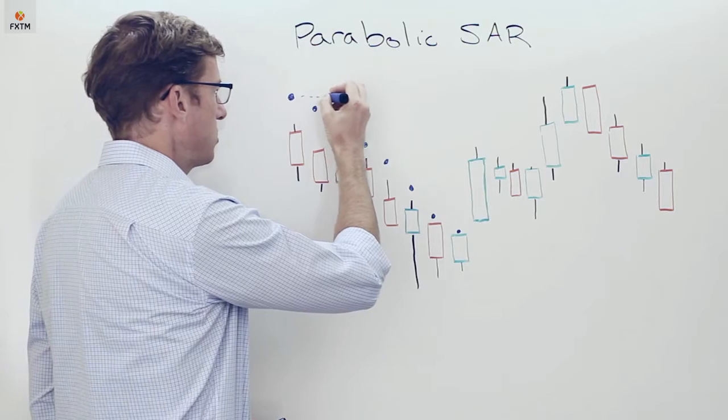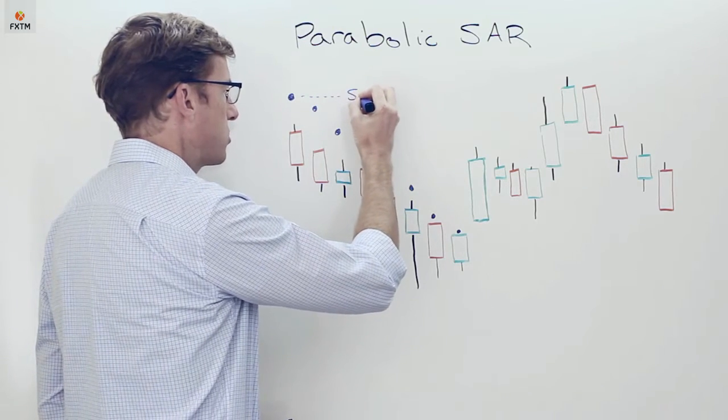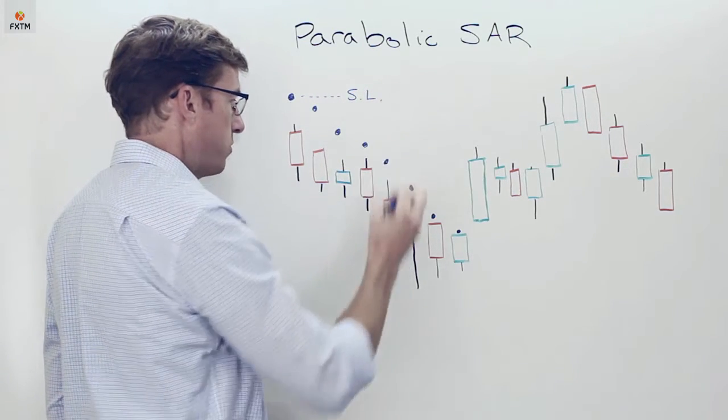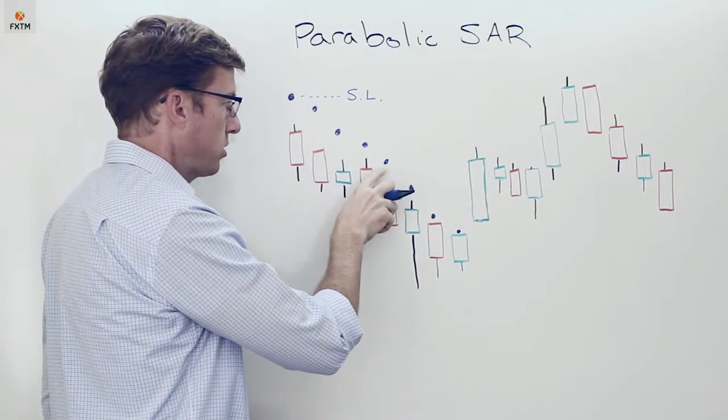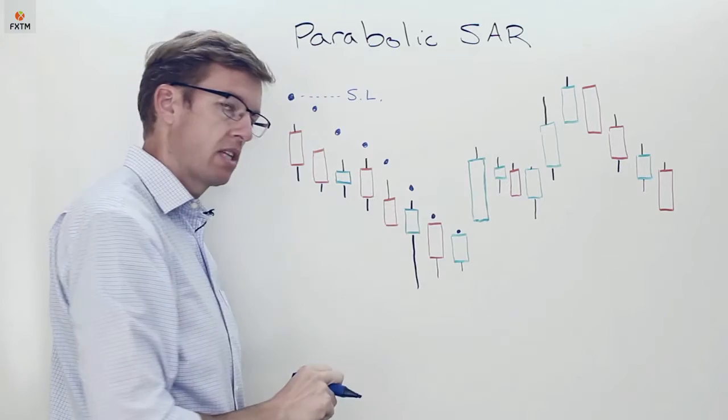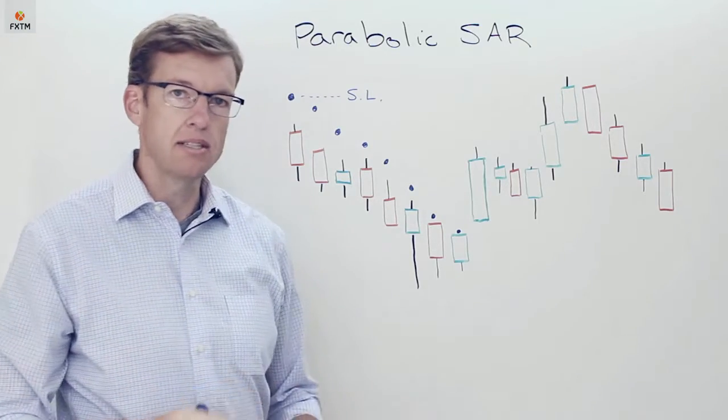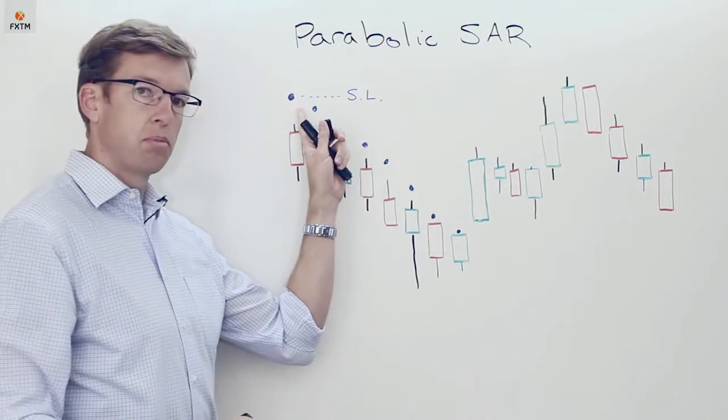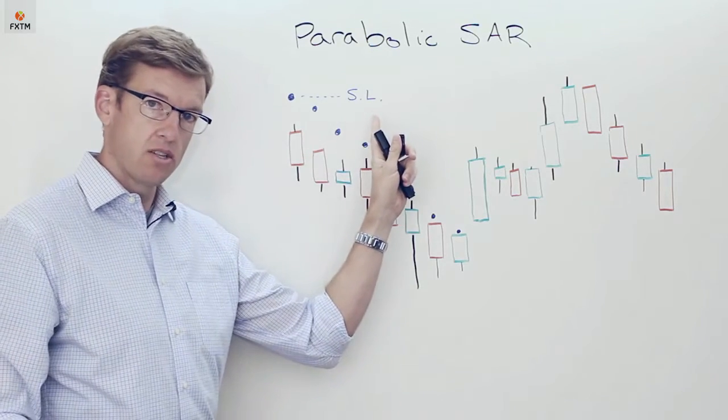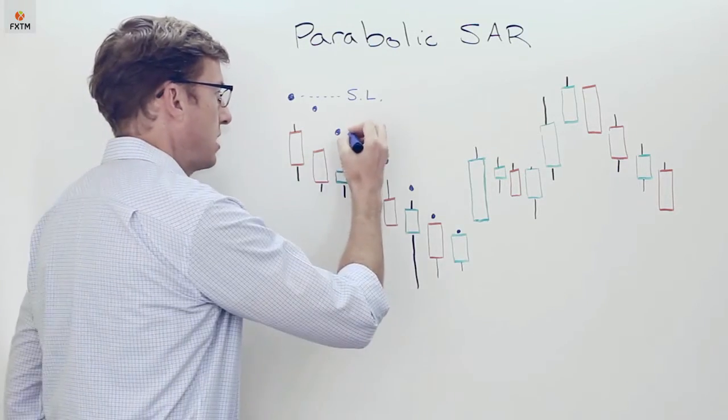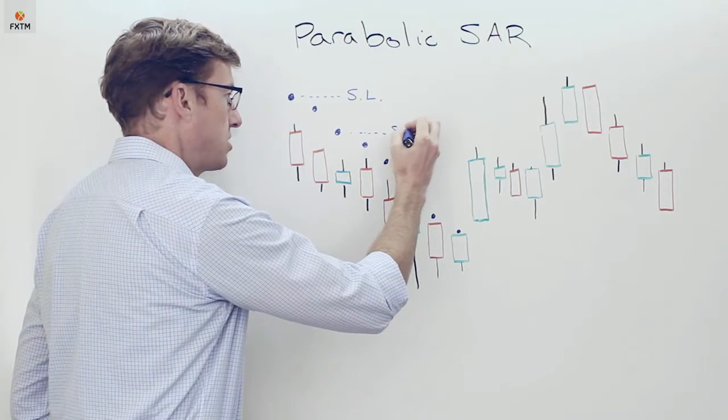And this is an important one—a lot of investors will use it to establish a trailing stop loss. You can see here as the blue dot is above the candle at the very beginning, they may set their initial stop loss there and then subsequently move it down with each new readjustment of those dots.